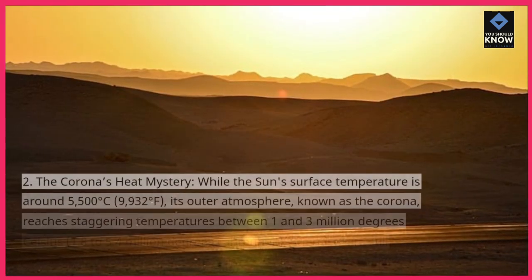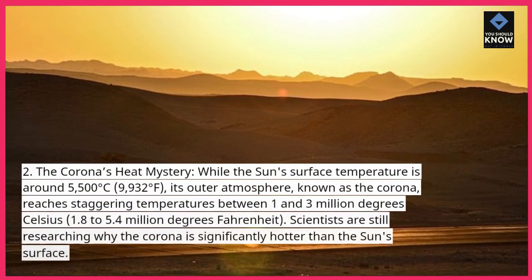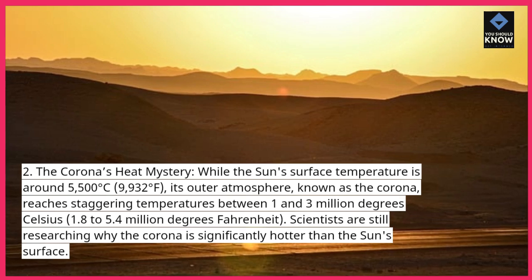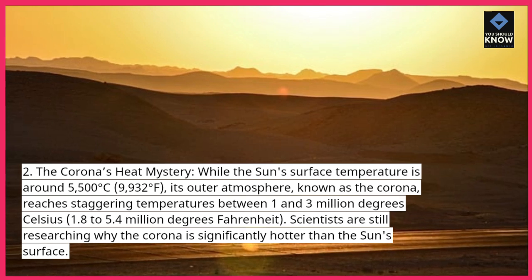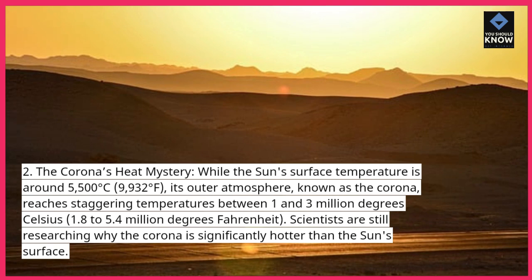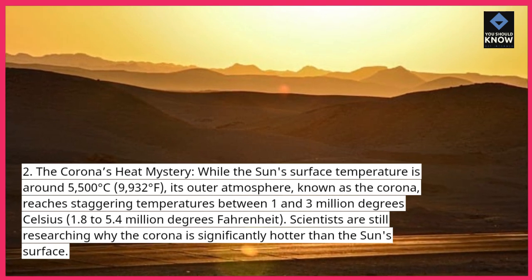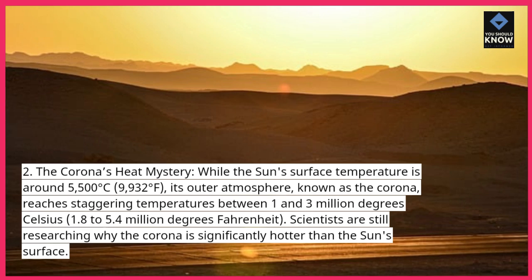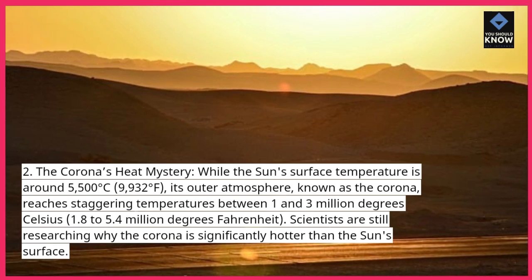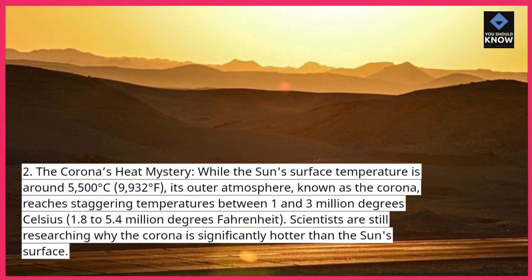The corona's heat mystery: while the sun's surface temperature is around 5,500 degrees Celsius (9,932 degrees Fahrenheit), its outer atmosphere, known as the corona, reaches staggering temperatures between 1 and 3 million degrees Celsius (1.8 to 5.4 million degrees Fahrenheit). Scientists are still researching why the corona is significantly hotter than the sun's surface.